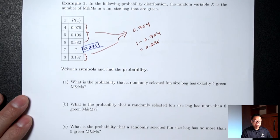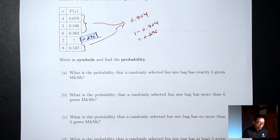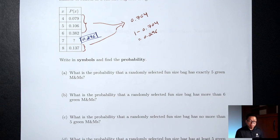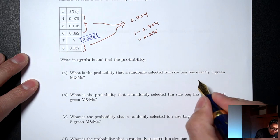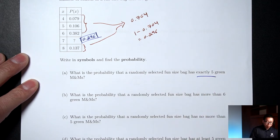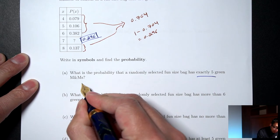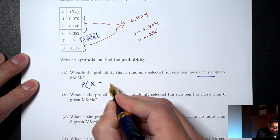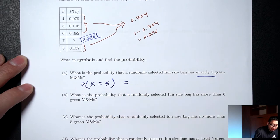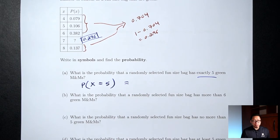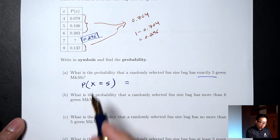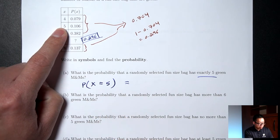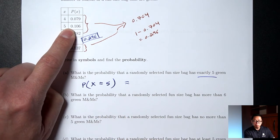Part A: What's the probability that a randomly selected fun-sized bag has exactly 5 green M&Ms? In symbols, we want P(X = 5). 'Exactly equal to 5' just refers to the row where x is 5, so the answer is 0.106.